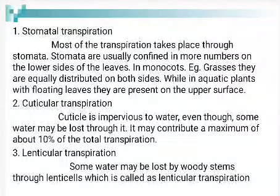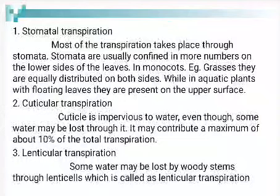Most of transpiration takes place through the stomata — this is known as stomatal transpiration. Stomata are usually found in greater number on the lower side of leaves. In monocot grasses they are equally distributed on both sides, while in aquatic plants with floating leaves they are present on the upper surface.